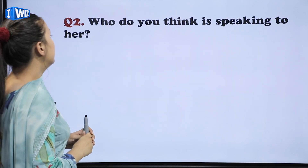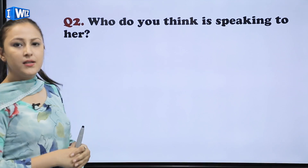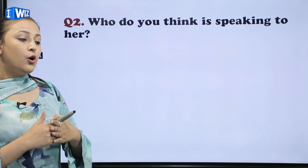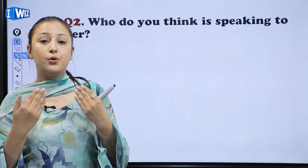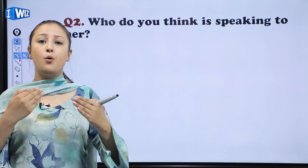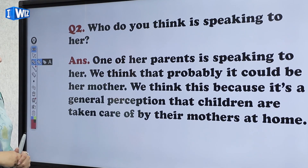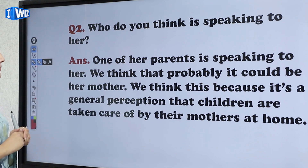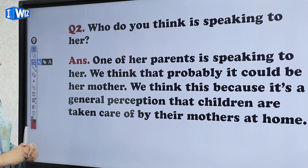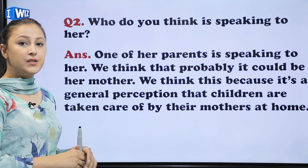The next question is: who do you think is speaking to her? Of course, her mother. Mother is the one who will tell you to do good things and explain what to do in the right way. So the answer is, one of her parents is speaking to her — probably her mother. We think this because it is a general perception that children are taken care of by their mothers at home.